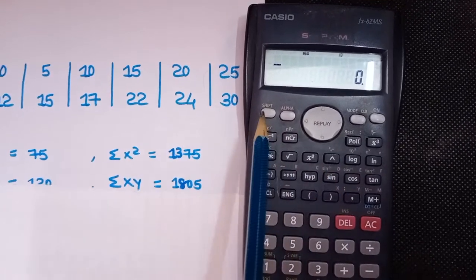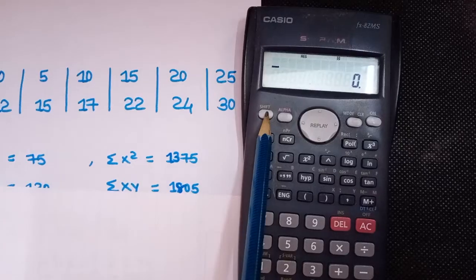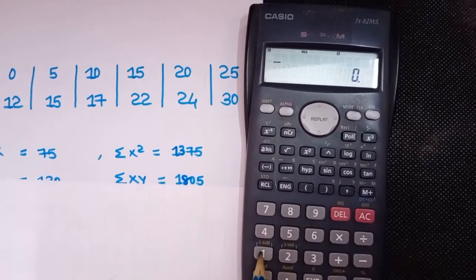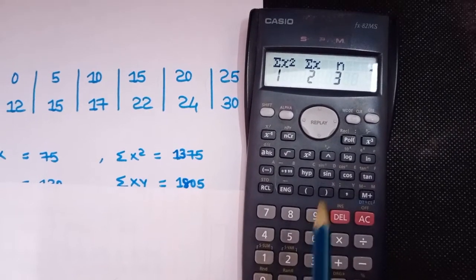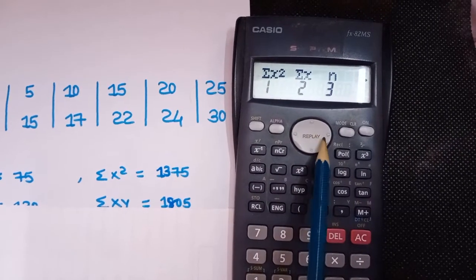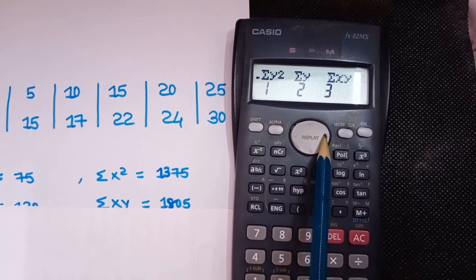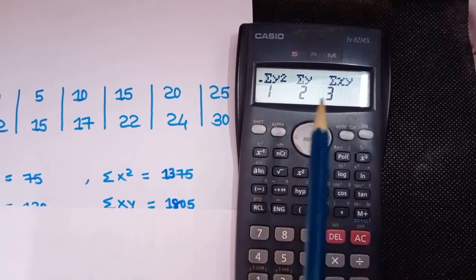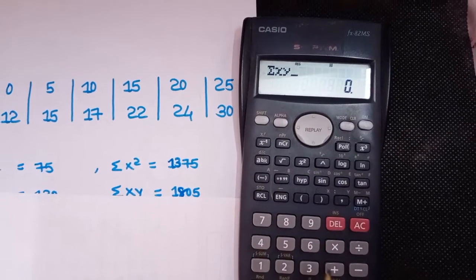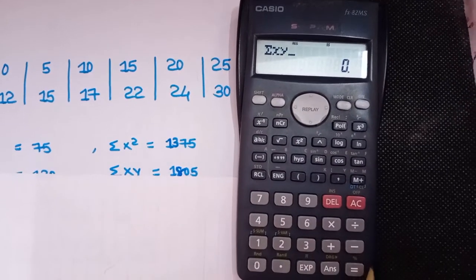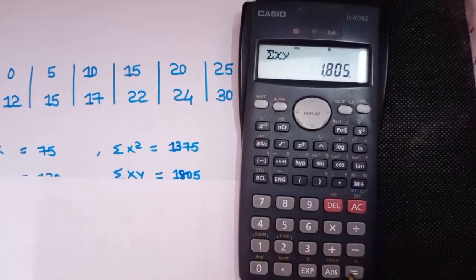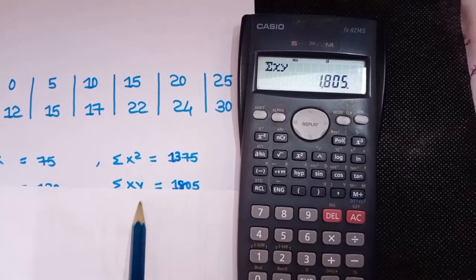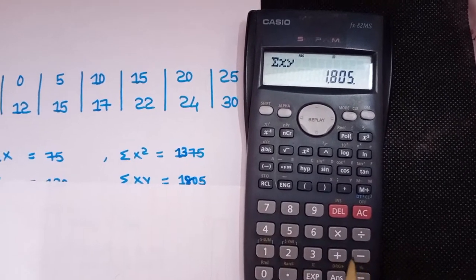Then I want to find out ΣXY, so press AC, then press Shift S-SUM (that is Shift 1), click on Next, and from here you can see ΣXY. Press 3 then equal — I got the value 1805.